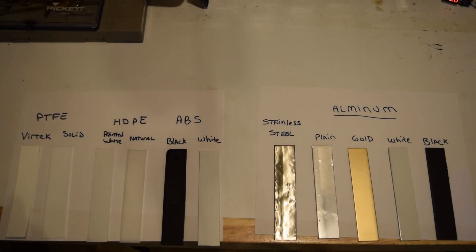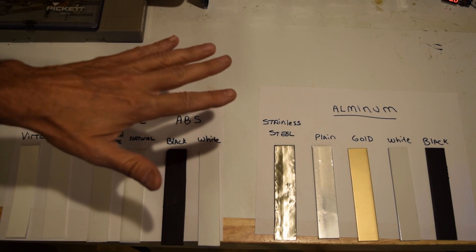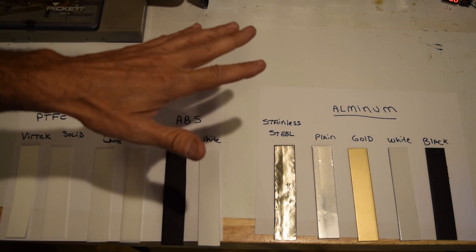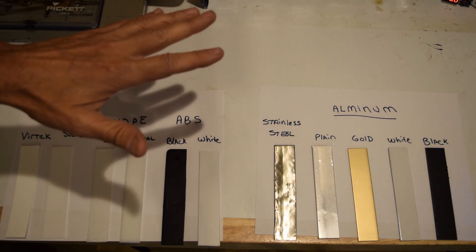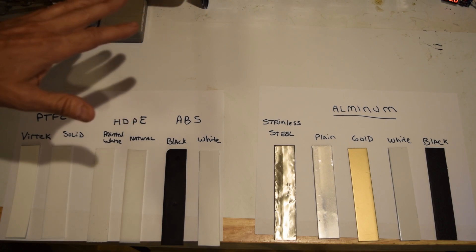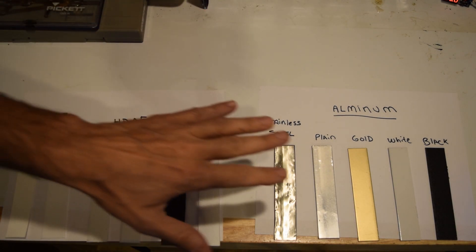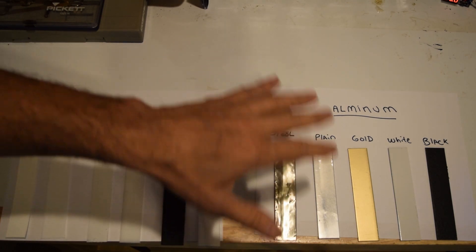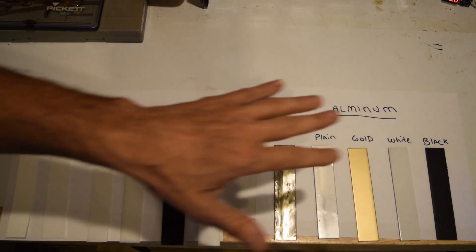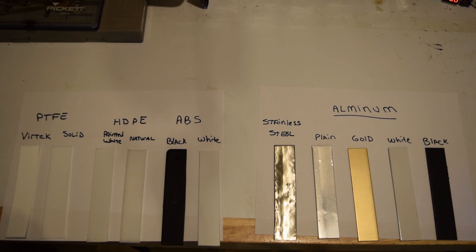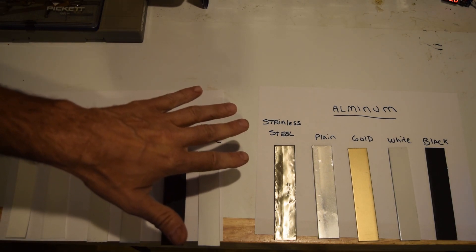What we're going to compare today are some opaque materials. Opaque materials are materials where you get no transmission. It's all going to be either reflective or absorptive energy. So we have aluminum. I took plain aluminum and we've painted it several different colors to show the effect of different colors on the aluminum. And then we also have stainless steel.